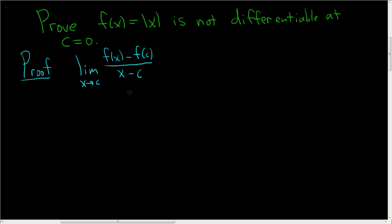So this is what we have to use. If a function is differentiable at c, then this limit will exist. So in our case, f of x is the absolute value of x, and c is 0.